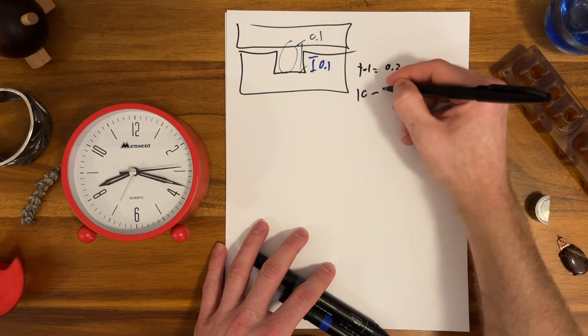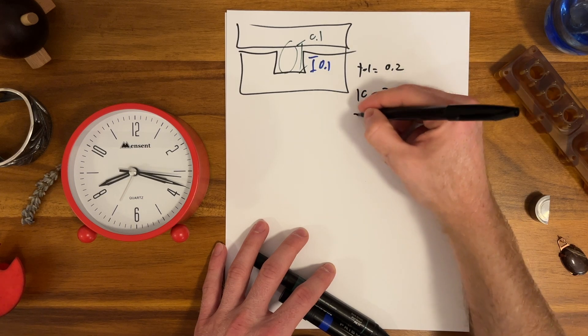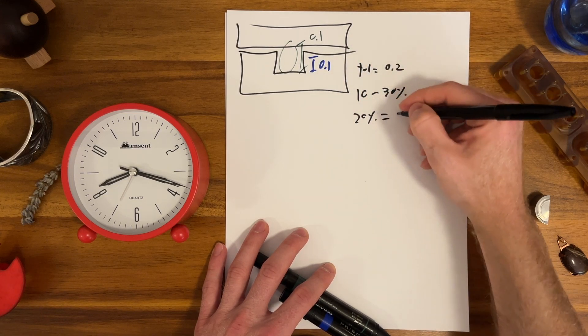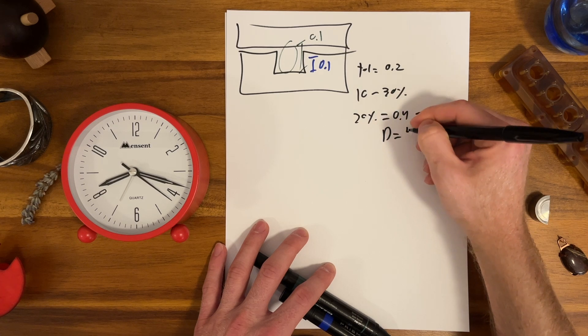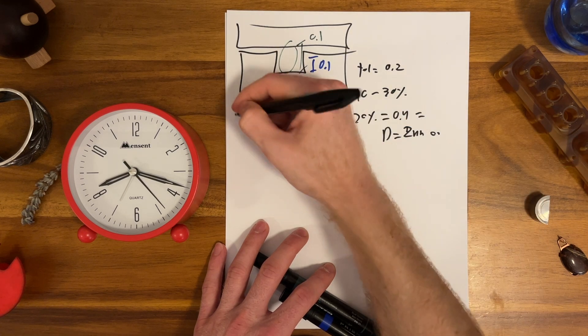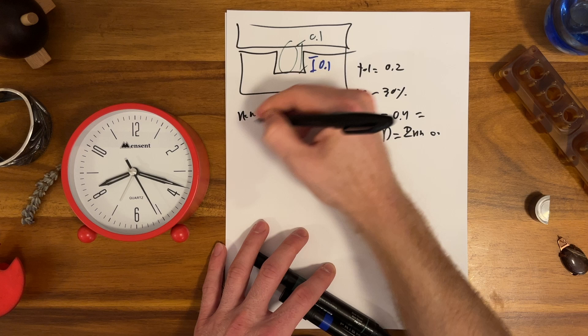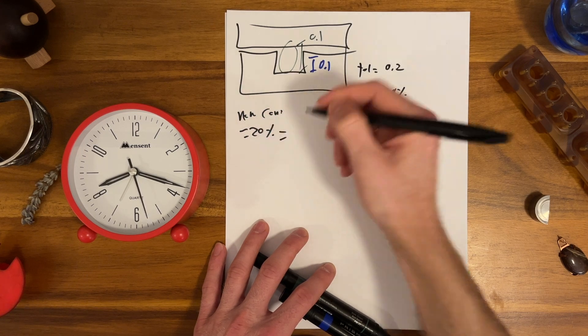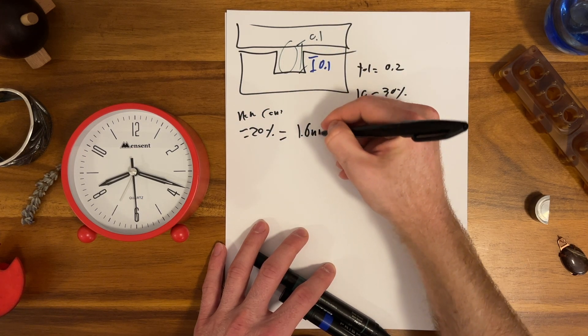You need to fit that between 10 to 30 percent compression. Therefore, 20 percent of the difference equals 0.4 millimeters equals diameter is a two millimeter o-ring. Nominal compression is 20 percent. That means that the groove height is 1.6 millimeters.